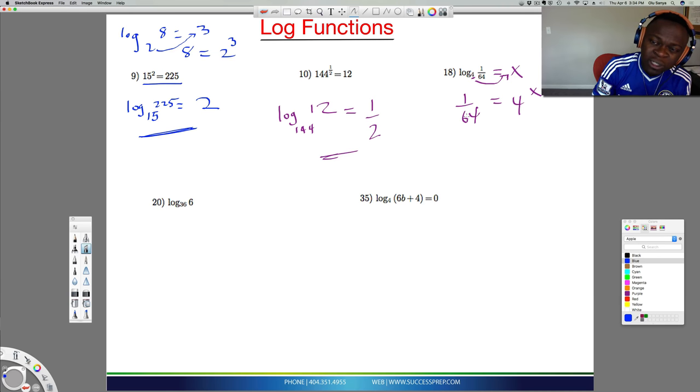So 4 to the what power gives me... I want this 64 to have a base of 4 just like this 4 to the x does. Well, that's going to be 1 over 4 cubed, because 4 times 4 times 4 is 64, right? So I know that this is correct. This is 4 to the x, but the problem is this 4 cubed is at the base level and I don't like that. So I'm going to make this 4 to the negative 3.